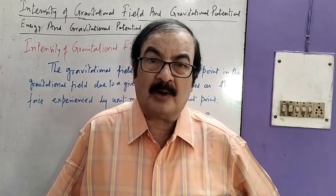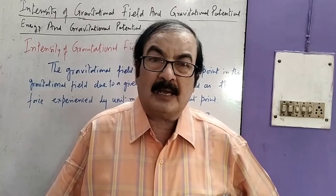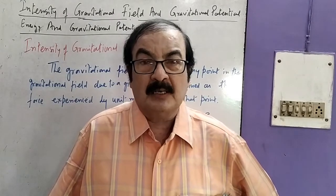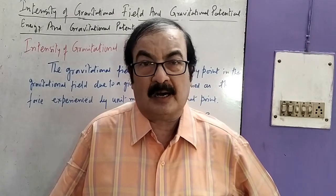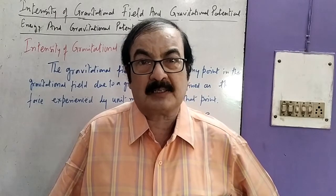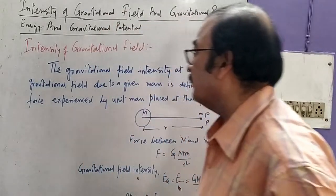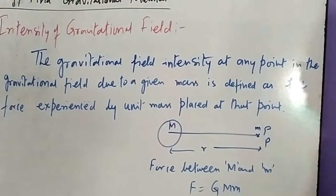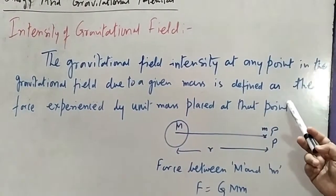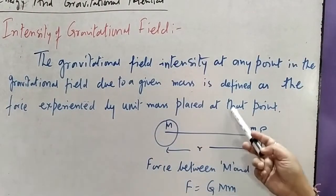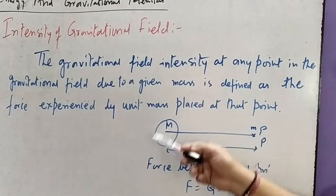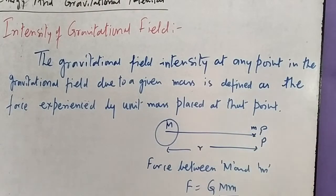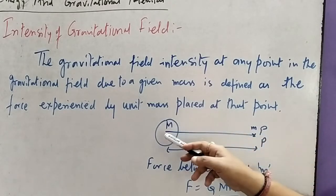At a distance R from a given mass capital M, the intensity is that amount of force which is applied on a unit mass placed at a given distance R from the main point mass capital M. We define the gravitational field intensity at any point in the gravitational field due to a given mass as the force experienced by a unit mass placed at that point. Suppose here is the given mass capital M, and we consider a test mass placed at any distance R.